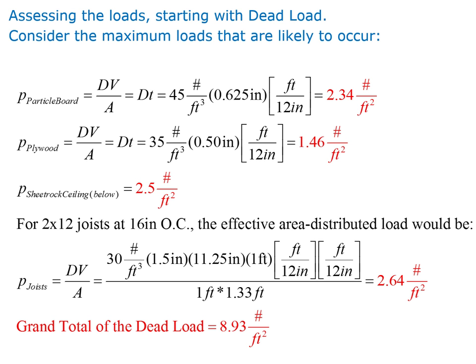The heaviest floor considered combines 5/16-inch particle board and 1/2-inch plywood. Using upper-limit densities, particle board contributes 2.34 psf and plywood contributes 1.46 psf. Half-inch sheetrock for the ceiling adds 2.5 psf. We then add the self-weight of 2×12 joists at 16 inches on center, computed as density × volume divided by the tributary floor area.